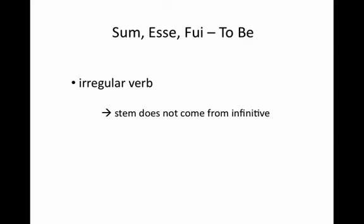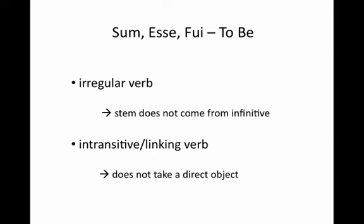For the verb sum, esse, fui, you simply need to memorize your endings for the present, the imperfect, and the future. Also, it's an intransitive or linking verb, so when we use it in a sentence, it does not take a direct object. Instead, if it's going to take an object, it'll take a predicate nominative. It will never take an accusative.